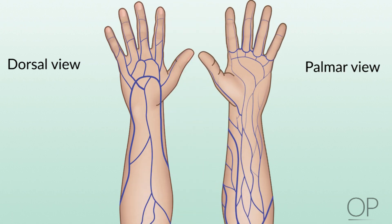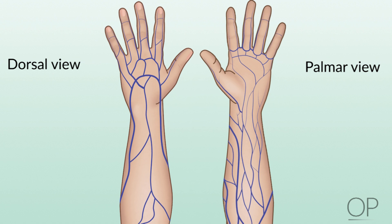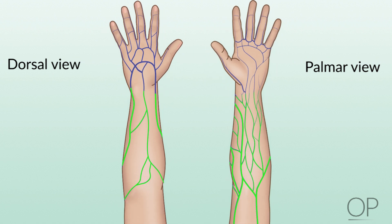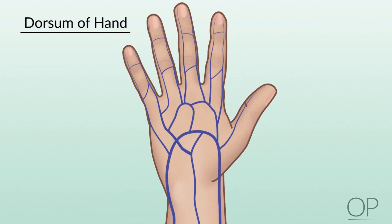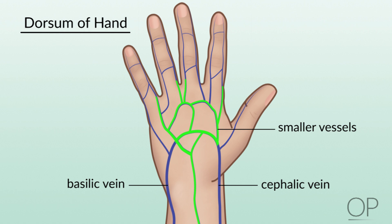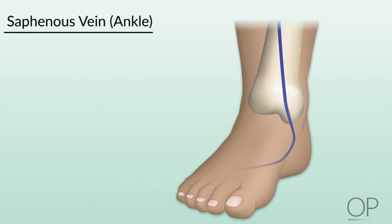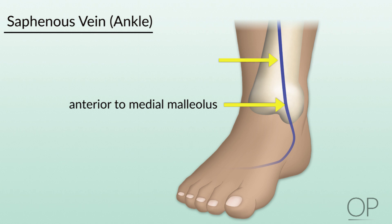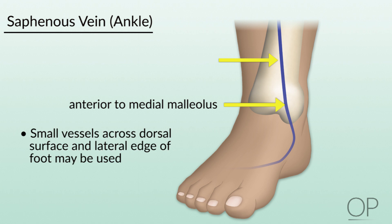Next, choose a site for peripheral IV placement. Sites most distal on any extremity are always preferred, as this allows you to use the same vein further up the extremity in the future. The dorsum of the hand is one of the most common areas in the pediatric population. The cephalic vein runs along the thumb down the wrist, and the basilic vein is present in the hand and forearm. The saphenous vein is located right in front of the medial malleolus and runs up the inner part of the leg. Other small vessels on the dorsal surface of the foot and lateral edge can also be used.